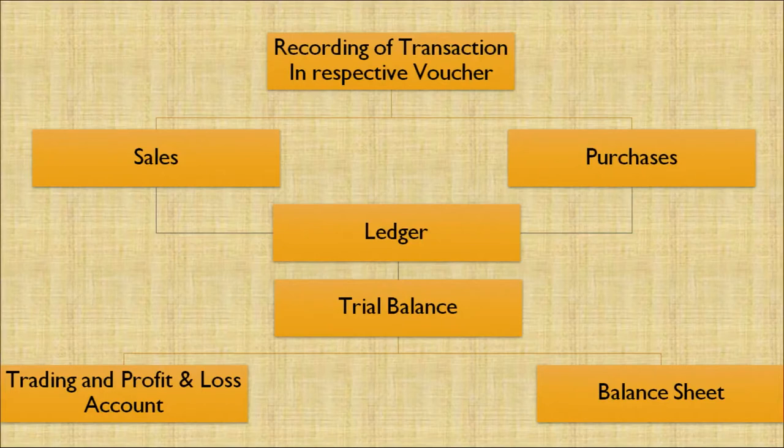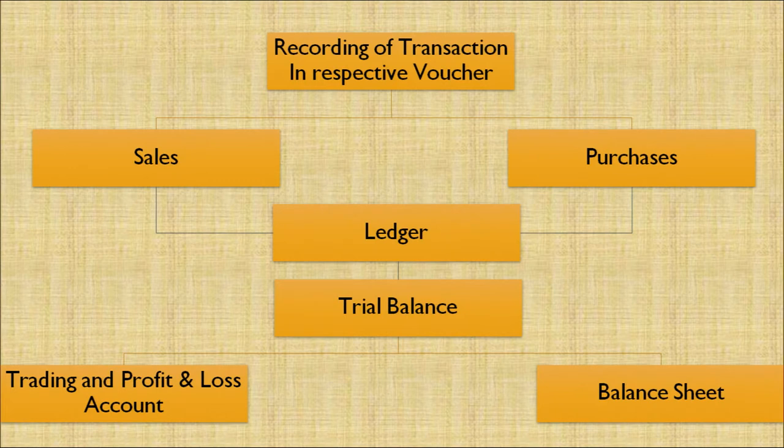Let's now discuss the role of a computer in accounting. While recording a transaction in respective accounting vouchers — there could be sales, purchases — both sales and purchases go into the ledgers, and the ledgers impact our trial balance. After preparing a trial balance, there is a trading account, a statement of profit and loss, and a balance sheet. All these accounting entries can be passed through the computer and computer systems.